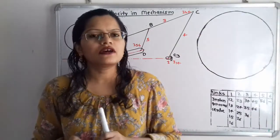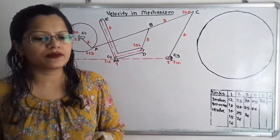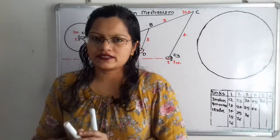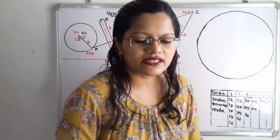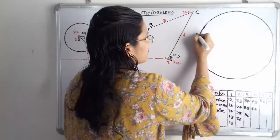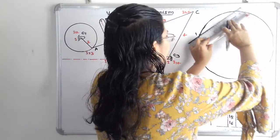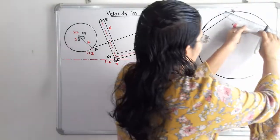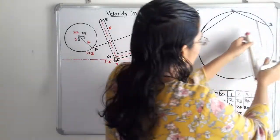To find the remaining instantaneous centers, we apply Kennedy's method. We draw a circle with numbers representing the six links. Inside the circle we draw lines equal to the number of links. We join: 1 to 2 (i12 present), 2 to 3 (i23 present), and 3 to 4 (i34 present).